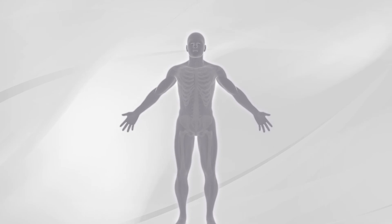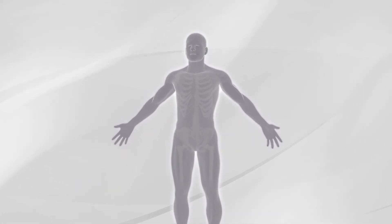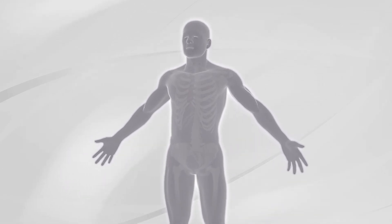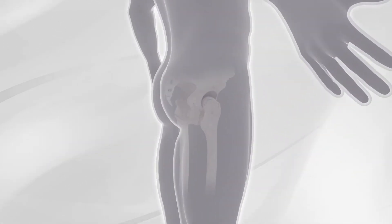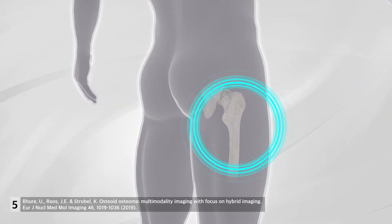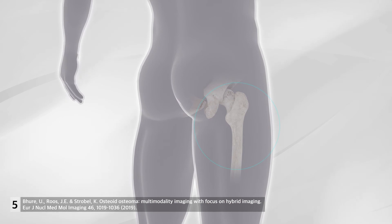Osteoid osteomas are benign bone tumors that account for about 10% of all benign bone tumors. In 85% of cases, they occur between 5 and 25 years of age and are more common in males. Osteoid osteomas are more frequent in the lower extremities, causing pain, localized swelling, and joint stiffness, especially when near a joint.